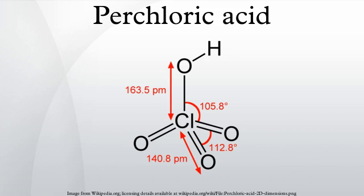Perchloric acid is an inorganic compound with the formula HClO4. Usually found as an aqueous solution, this colorless compound is a stronger acid than sulfuric and nitric acids. It is a powerful oxidizer when hot, but its aqueous solutions up to approximately 70% at room temperature are generally safe,